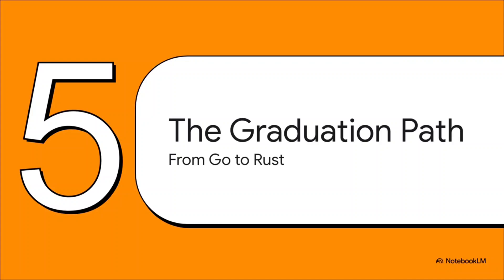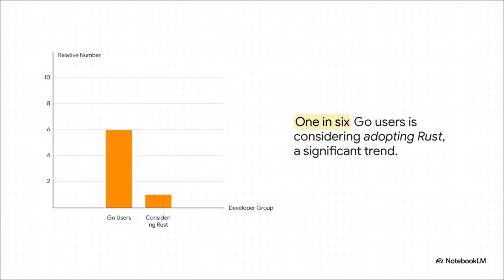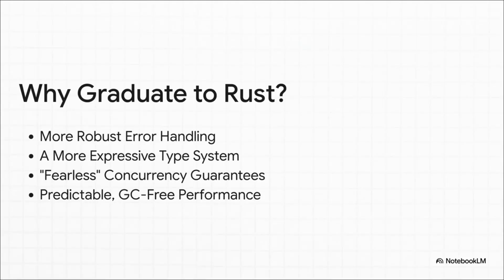There's a really interesting trend called the graduation path — teams that start with the beautiful simplicity of Go, but then find themselves looking over at Rust, wanting those ironclad guarantees it offers. Recent surveys show that about one in every six Go developers is actively considering picking up Rust. As projects get bigger and more complex, that initial simplicity of Go can start to feel like a limitation. Developers get pulled toward Rust for its robust error handling, a more powerful type system, fearless concurrency guarantees, and predictable performance without a garbage collector pausing their app.